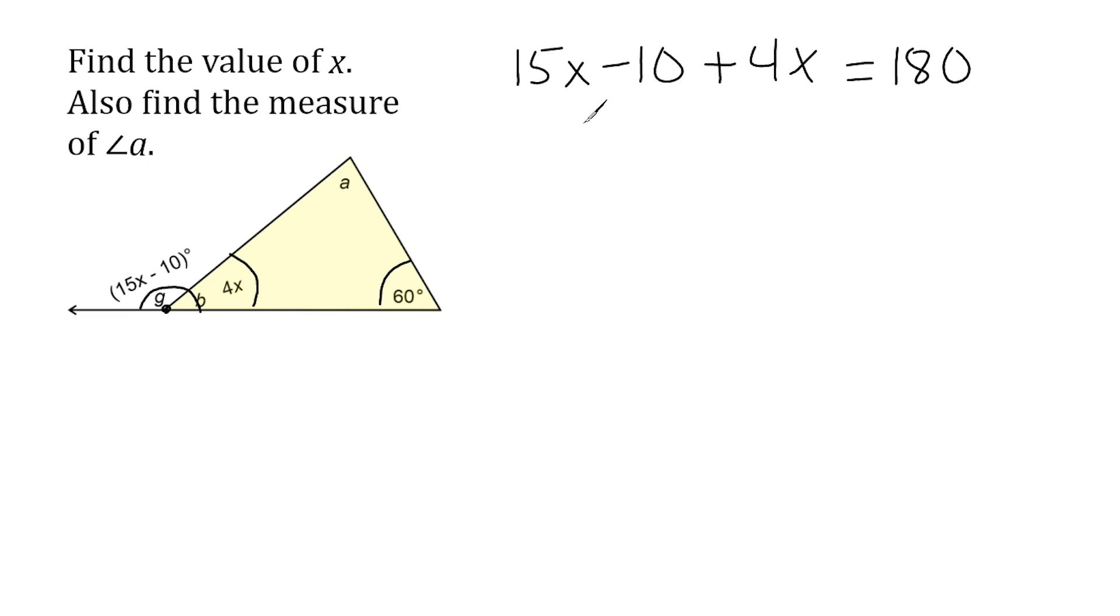Next, what we're going to do is we're going to combine our x terms here. We have 15x and 4x, which is a total of 19x. And right away, we're going to take this constant of minus 10 and move it to the other side of our equation by writing its inverse, which is to add 10.